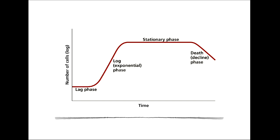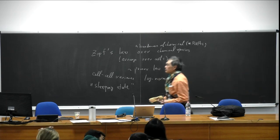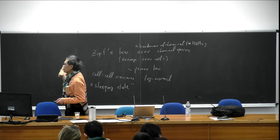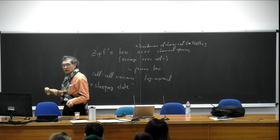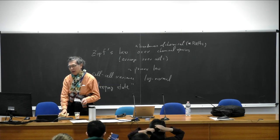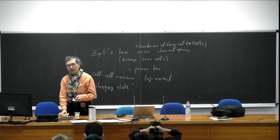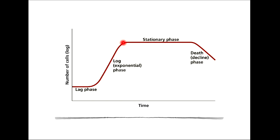We discussed some kind of reproduction of cells and the nature of that reproduction. Then I discussed a sleeping state. When you put bacteria into a new nutrient condition, initially it takes some time, then the number grows exponentially. Then they cannot grow anymore, and finally the population goes down.